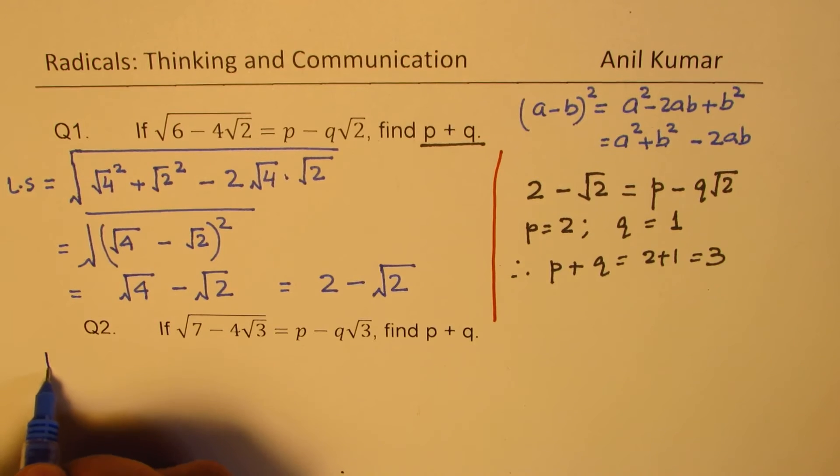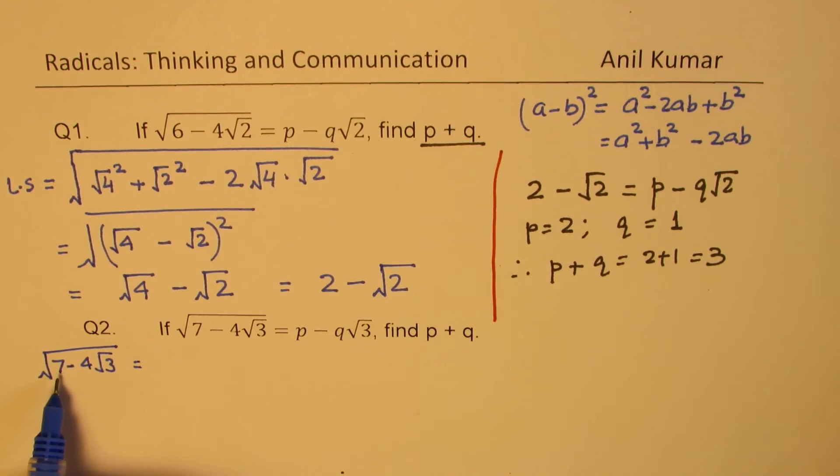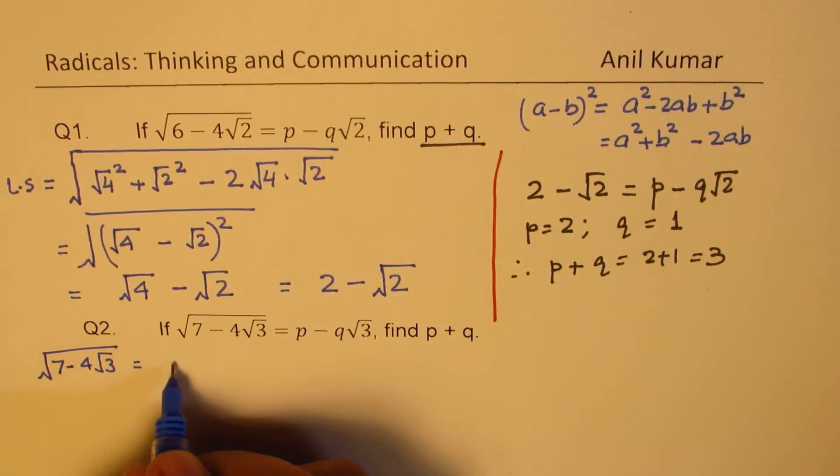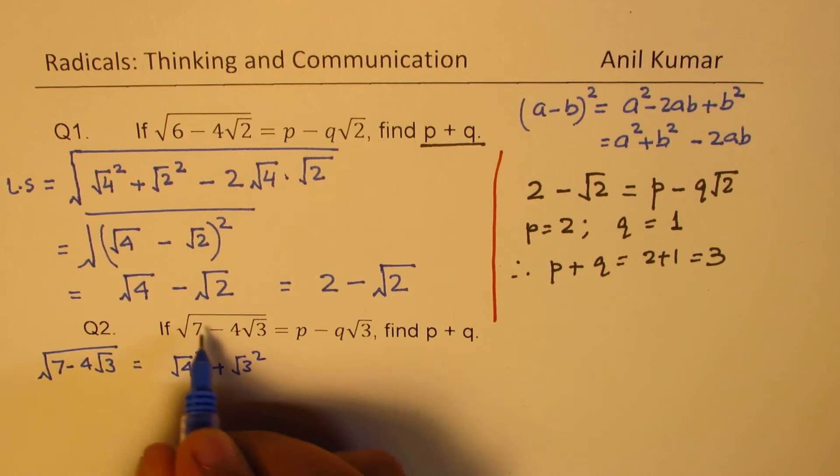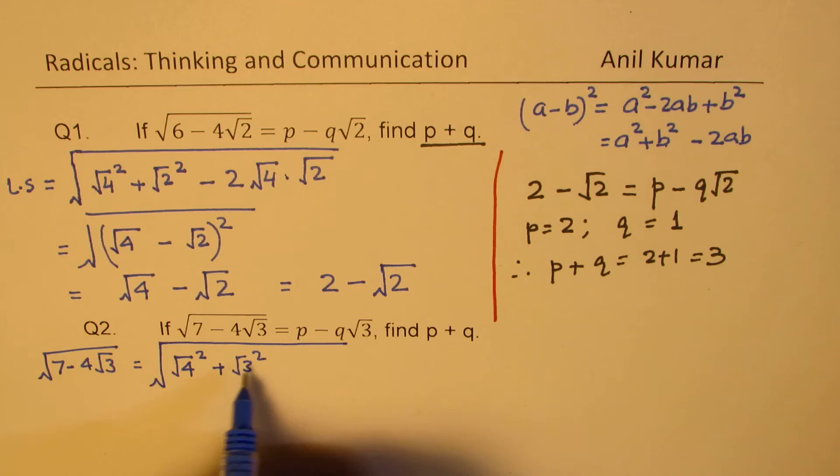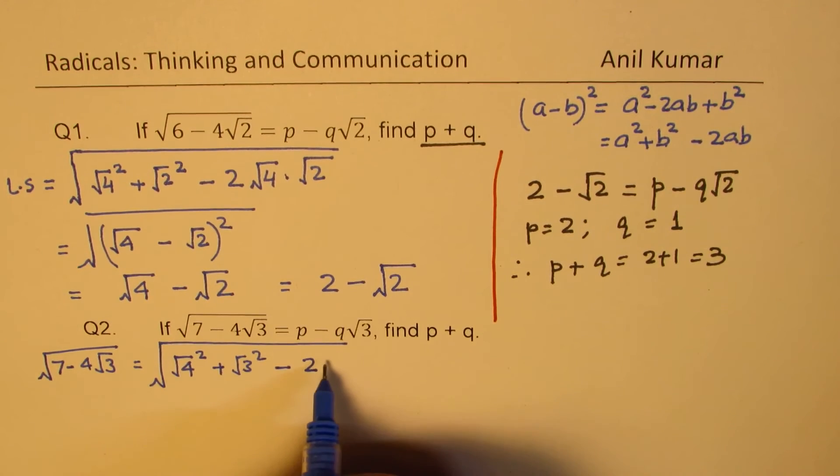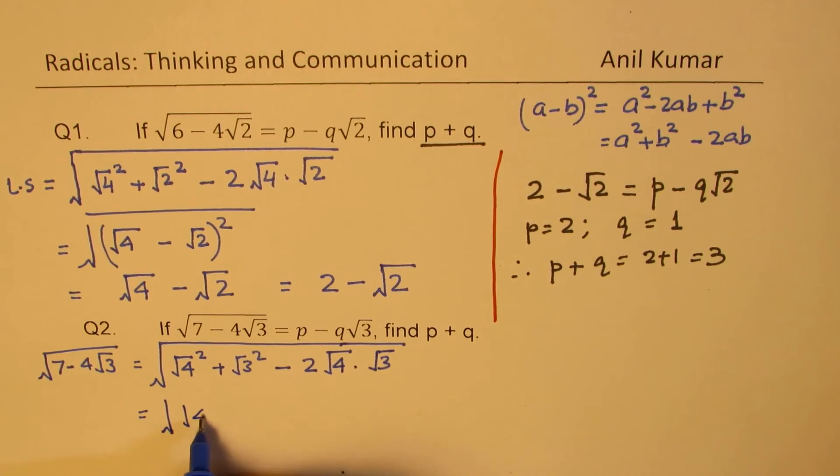So we'll begin with this left hand side, which is square root of 7 minus 4 square root 3. 7 can be written as a combination of 4 and 3. So we'll write this as square root 4 square plus square root 3 square, which is 4 plus 3 is 7. So it is within square root. And then, 4 square root of 3 can be written as 2 times square root of 4, which is 2. So 2 times 2 is 4 times square root 3. You get the idea. So the left side can be written in this form, which basically is square root of 4 minus square root of 3 whole square.